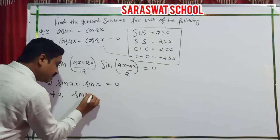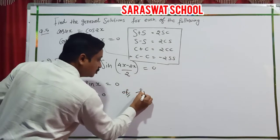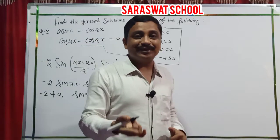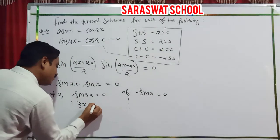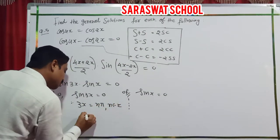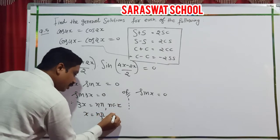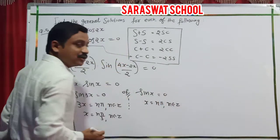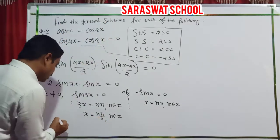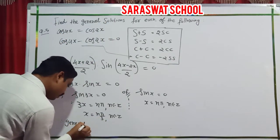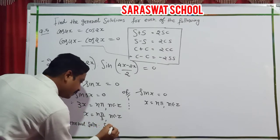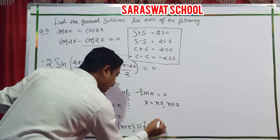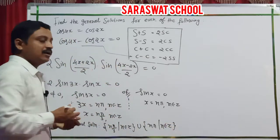Therefore sin 3x equals 0 or sin x equals 0. Sin is zero at every n pi. So the general solution: x equals n pi by 3, n belongs to Z, or x equals n pi, n belongs to Z. Both answers written in union form is our general solution.